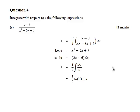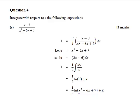Integrating 1 over u du is straightforward — that gives log u plus the constant of integration. Substituting u equals x squared minus 6x plus 7 back in, and the half outside is the same as the square root of this bracket, we can write it as the square root of log(x squared minus 6x plus 7). That's the simplest way of writing part C.